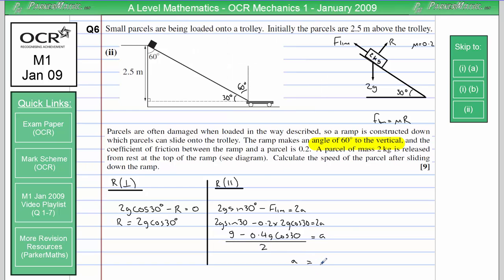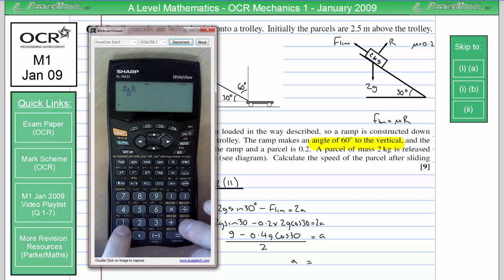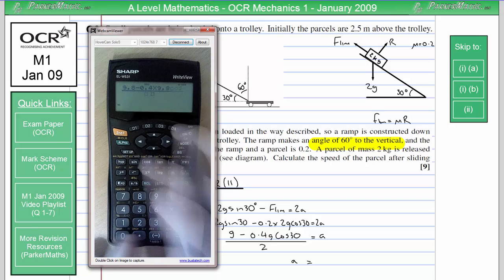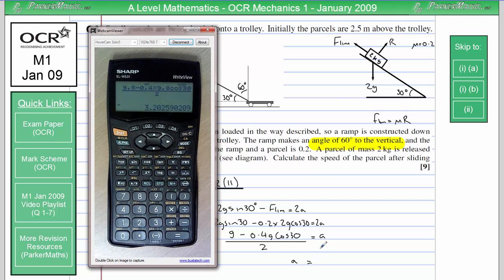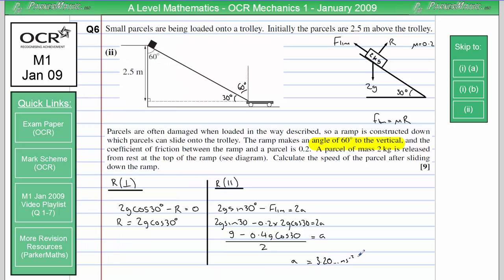So now I'll put that into my calculator, and I get an acceleration of 3.20 and so on. Now that I know the value of the acceleration, I can start thinking about my equations of motion, so I'll write down SUVAT.